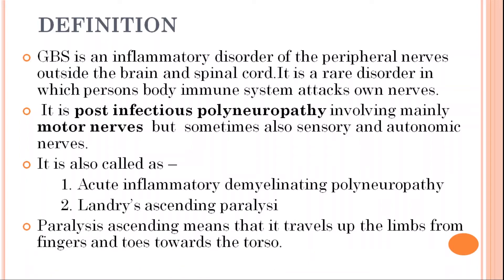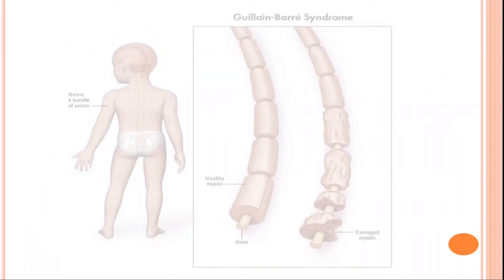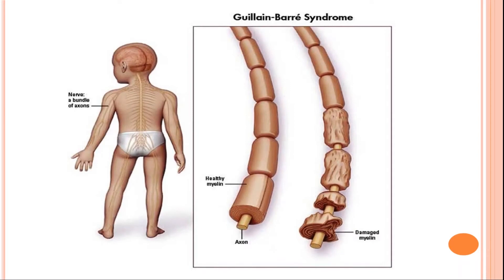Here, ascending paralysis means that it travels up the limbs from fingers and toes towards the torso. A figure is shown that in the normal nerve, the axon is surrounded by the healthy myelin sheath. But in a person having GBS, the axon is surrounded by the damaged myelin sheath. Generally, the myelin sheath becomes affected due to the body's own immune attack.